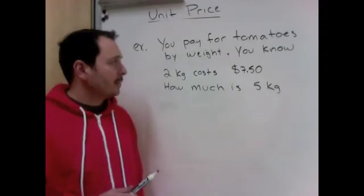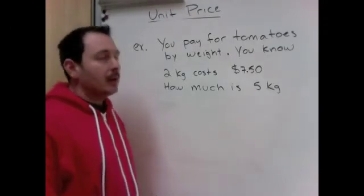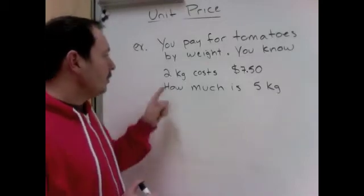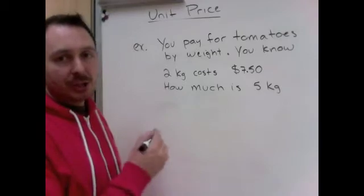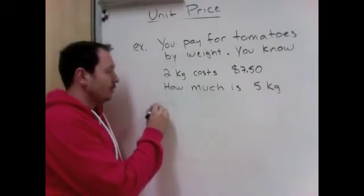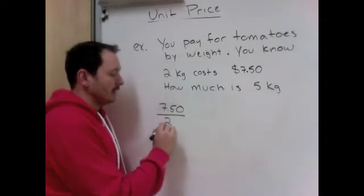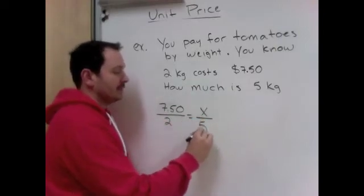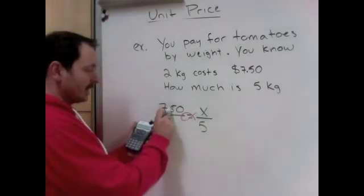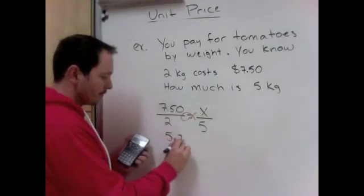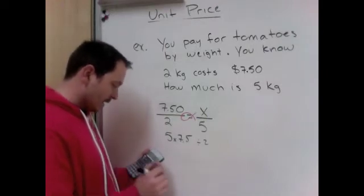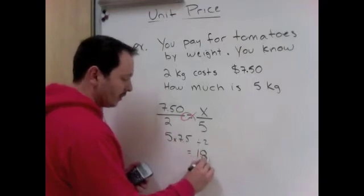Let's look at another example. Now instead of comparing two size items, let's say you know the price for a certain amount of something. So let's say you pay for tomatoes by weight. Most things in the produce section, you buy by weight. And you know that 2 kilograms will cost $7.50. How much is 5 kilograms? Now you could use last day's method, which was using ratios and rates. If you know that $7.50 is 2 kilograms, then how much is 5 kilograms? And we could use our fish technique, and we could do 5 times $7.50, divide 2. And it would cost $18.75.